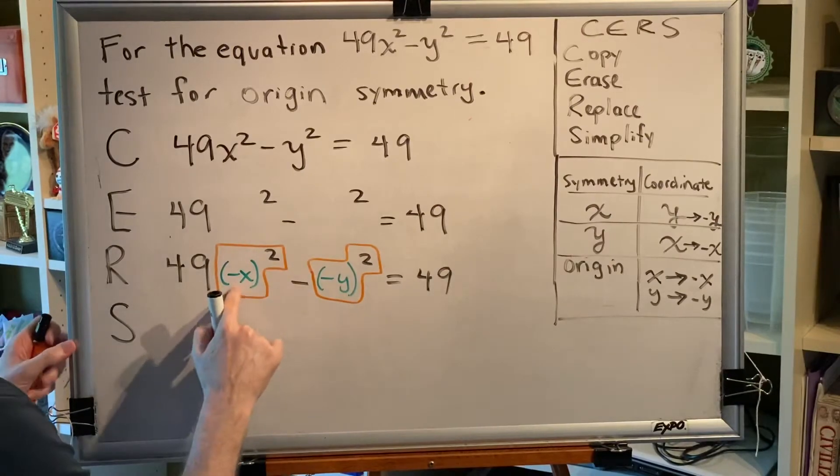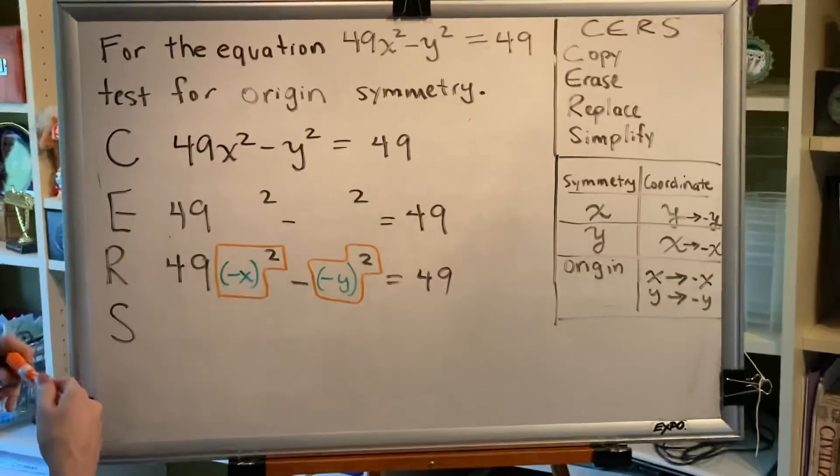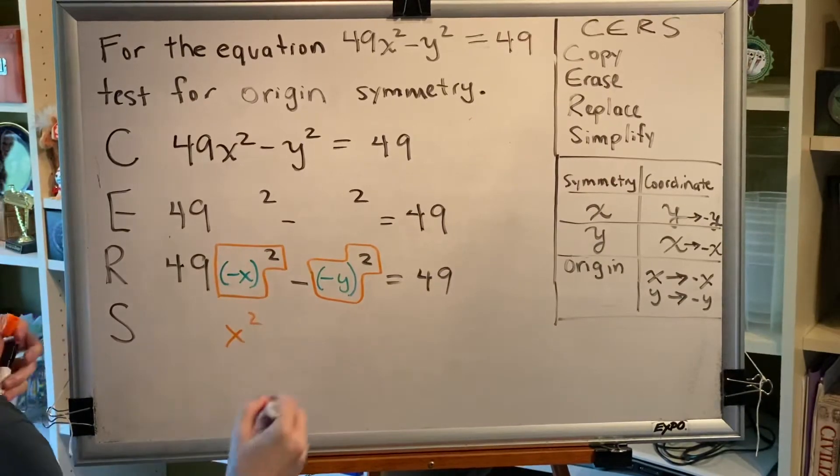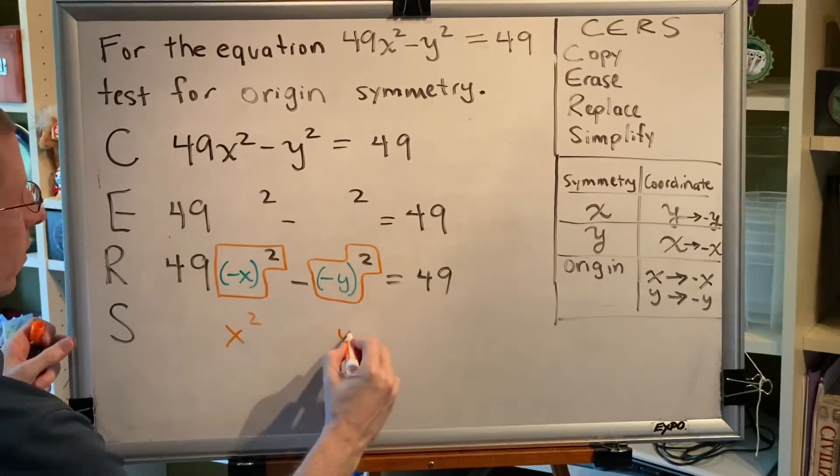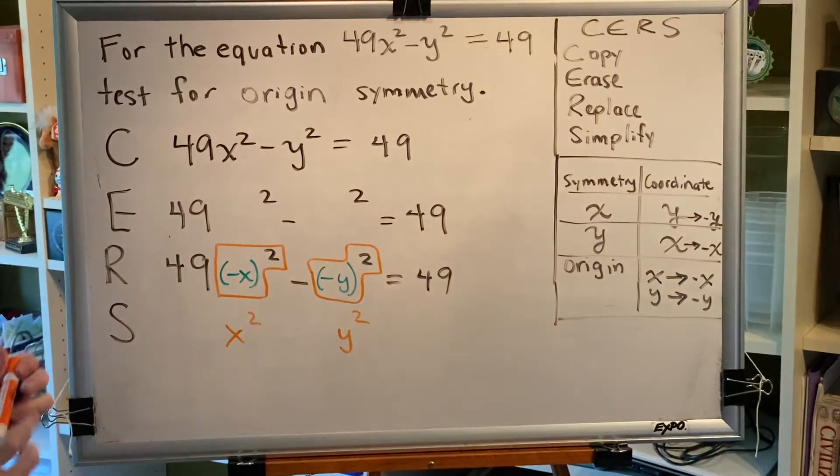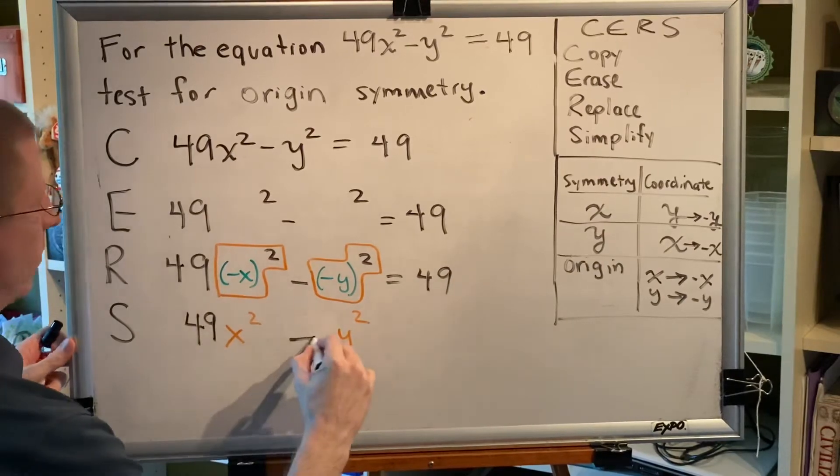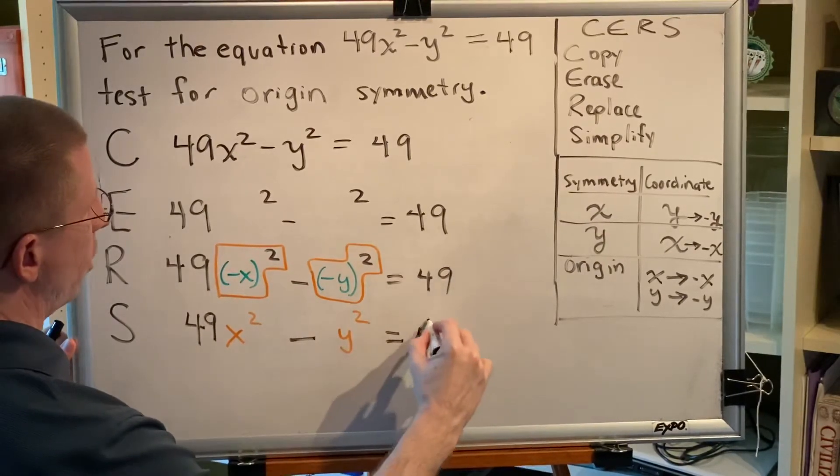Negative x in parentheses squared simply becomes positive x squared. Similarly, this becomes positive y squared. Then all of the things around it happen. So we've got this 49 and this subtraction and this equals 49.